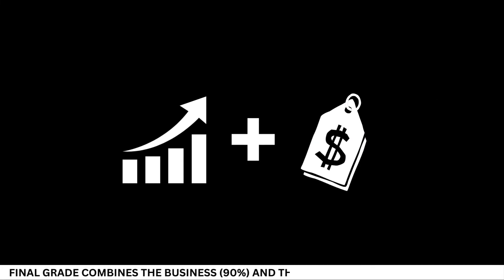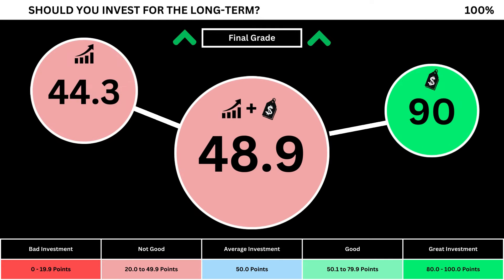Finally, we can put everything together to get the company's final grade. Adding the business grade and the fair price grade, we can see the company's final grade. Anything less than 50 means it's not a good long-term investment. A final grade above 50 means it would make a good long-term investment if you bought the stock right now. So what are your thoughts? Are you going to invest? If you do, invest wisely. And as always, take care of your money.